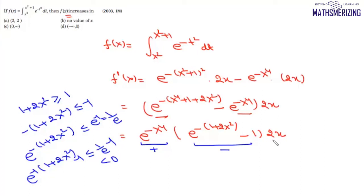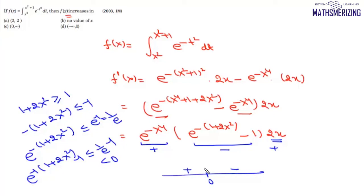Since e^(-x⁴) > 0 and [e^(-(1+2x²)) - 1] < 0, the sign of f'(x) depends entirely on the factor 2x. The critical point is x = 0. For x < 0, f'(x) > 0, and for x > 0, f'(x) < 0. Therefore f(x) is increasing on (-∞, 0), which is option D.